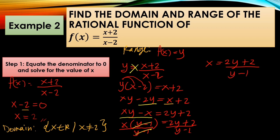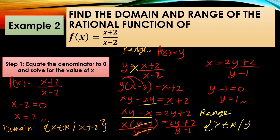To find the range, equate the denominator to zero: y − 1 = 0, so y = 1. The range is all real numbers except y is not equal to 1.